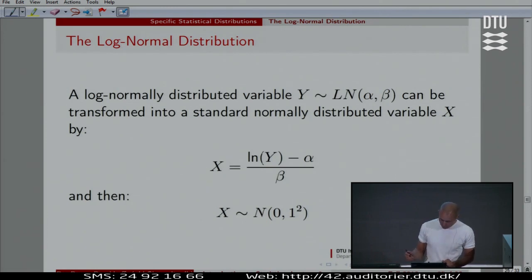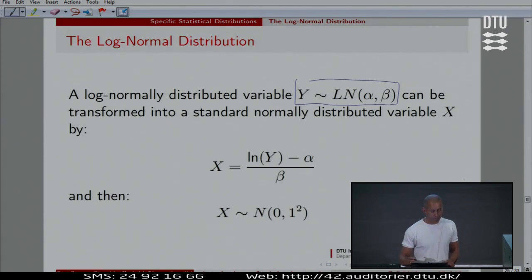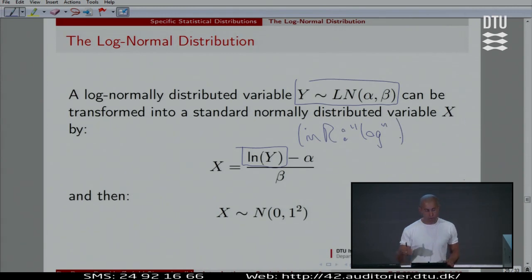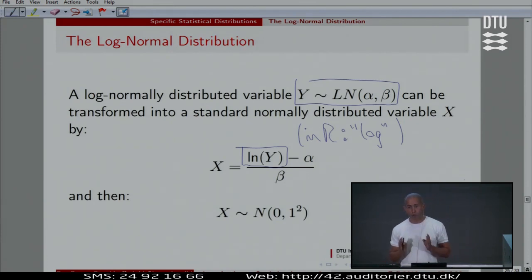So the log-normal is essentially an exponential version of the normal distribution. This makes it very easy to work with, even though the math expression looks complicated. If we're given something with a log-normal distribution, we can just apply the natural logarithm. Note that in R, the natural logarithm is called 'log', and you'd need options to use other bases. The slides and book use 'ln' for the natural log, but R uses 'log' — just be aware of that.